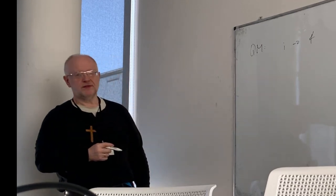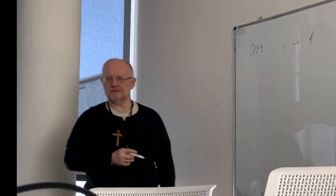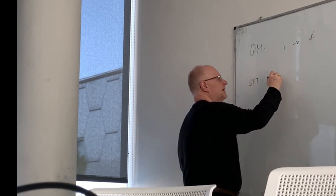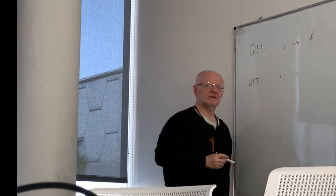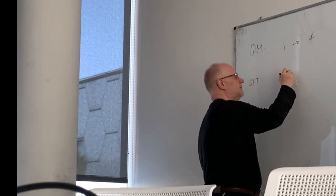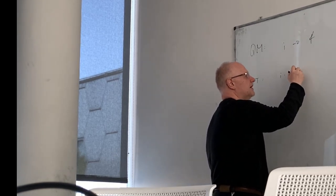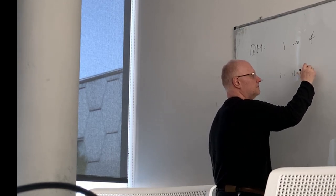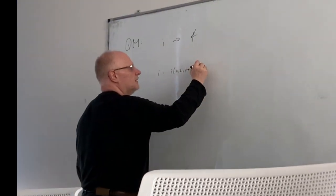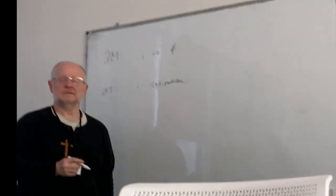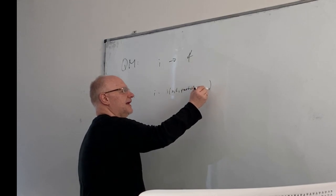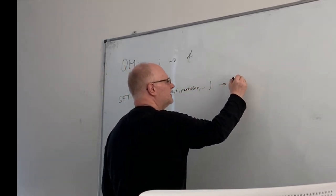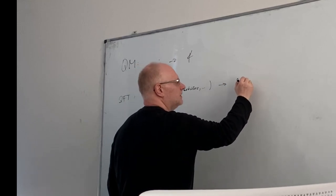So what is the difference to quantum field theory? In quantum field theory, my initial state is now something that depends on X, T, particles, and so on. And we want to write it in the same simplified way that an initial state goes into the final state that has the same dependencies.